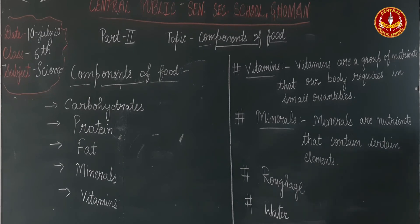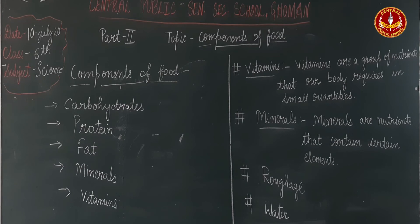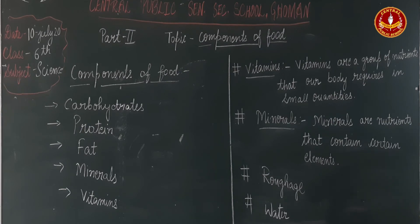Iron is a mineral that acts as a carrier of oxygen in the body. Calcium is found in the body and is important for bones. Iodine is found in salt and sea foods, and controls the function of the thyroid gland.